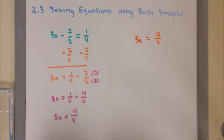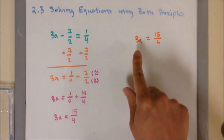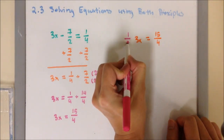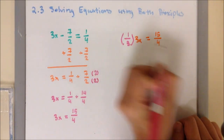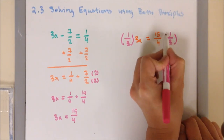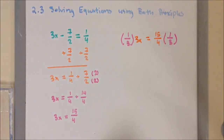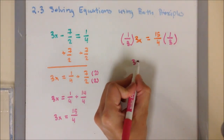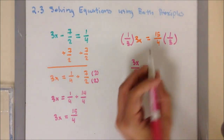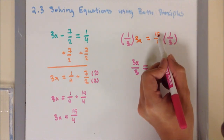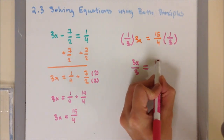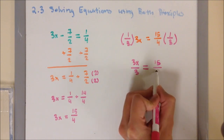Next, I'm going to apply the multiplication principle. The reciprocal of 3 is 1/3, and I'm going to multiply also on the right side by 1/3. From there, it's going to be 3x over 3 equals — when you multiply by a fraction, numerator times numerator, denominator times denominator — so it's going to be 15 over 12.